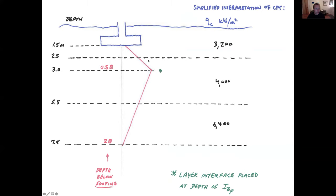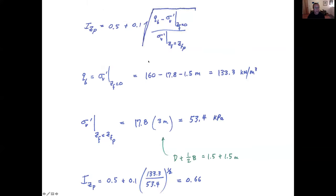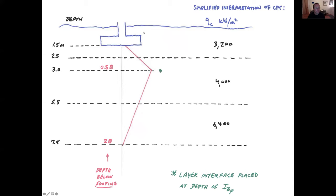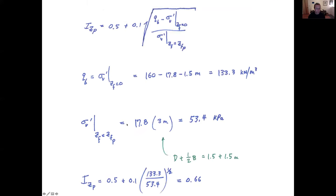Sigma v prime at the depth of the peak is going to be 17.8 times 3 meters this time. So we can go back to that graphic and find that we're coming down to this point here. So it's three meters under the ground surface to get down there. And it's 17.8. All of this in this region is 17.8 kilonewton per cubic meter. And that three is representing the depth of embedment plus half of b. So I'll go back again. Depth of embedment one and a half plus half of b to get down to the peak. That peak is defined as being for a square foundation 0.5b below the base of the foundation. 53.4 is what results from that. Iz at the peak therefore with those intermediate calculations comes out to 0.66.